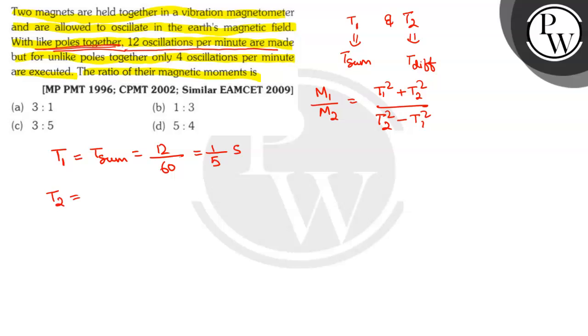With like poles together, only 4 means 4 by 60. Sorry, this is not 12 by 60. Neither is this 4 by 60. This is 60 by 12, that is 5 seconds. And this is 60 by 4, that is 15 seconds.